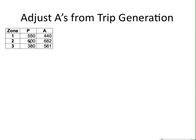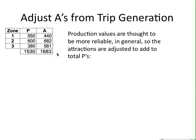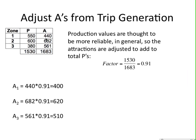For the first step, we adjust the A's from trip generation. We adjust the attractions because we are typically more confident in the production values and assume those are more accurate. We want to multiply the A values by a factor that makes them add up to 1,530. That factor is 0.91, so A1 is 440 times 0.91, which gives 400, and so on.